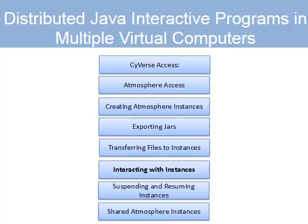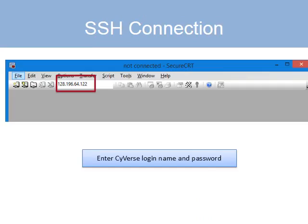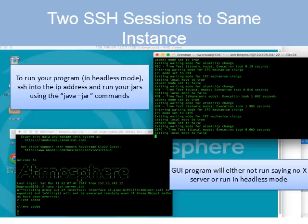We now have an instance that is usable with the data we need, and now we need to interact with it. This instance is in the cloud — it doesn't have a screen or keyboard; those would have to be your local computer. You need some client on your local computer talking to some server on your instance to process those interactions. The instance has an SSH server and you need an SSH client to which you give the IP address. On Windows you can use SecureCRT, and once you enter the address it will ask for your CyVerse login name and password. Then you have an SSH session. Here Brendan has created two SSH sessions to the same instance — one running the server, one running the client.